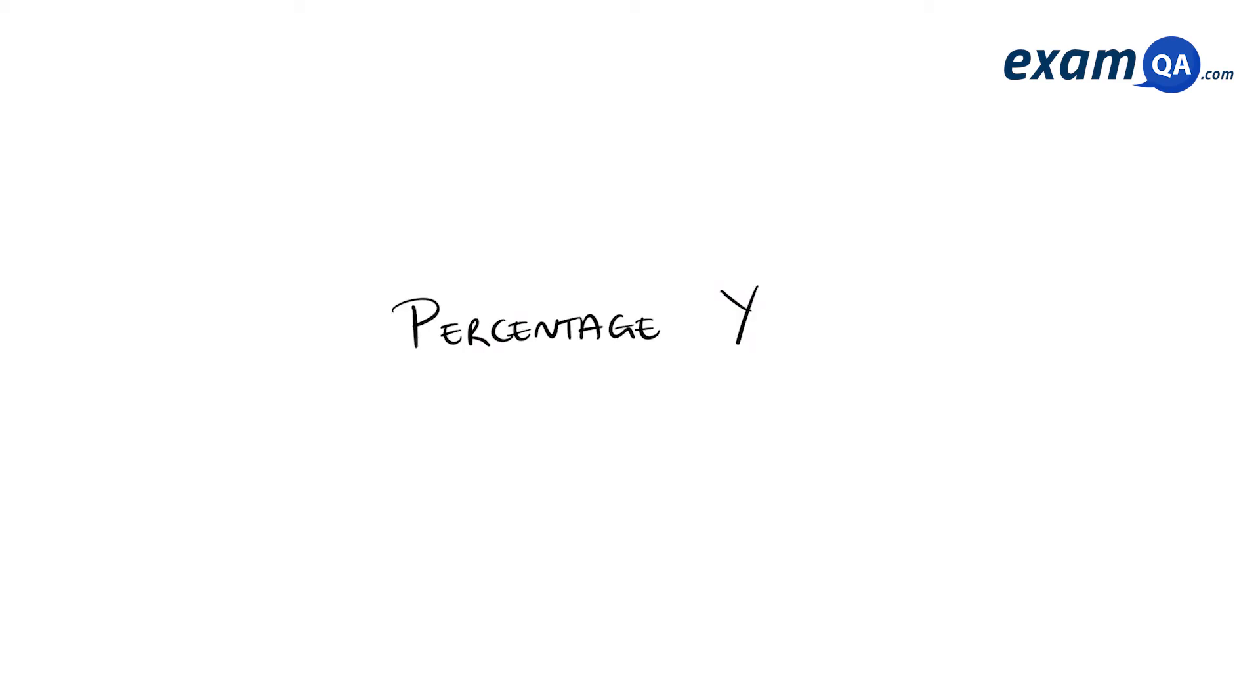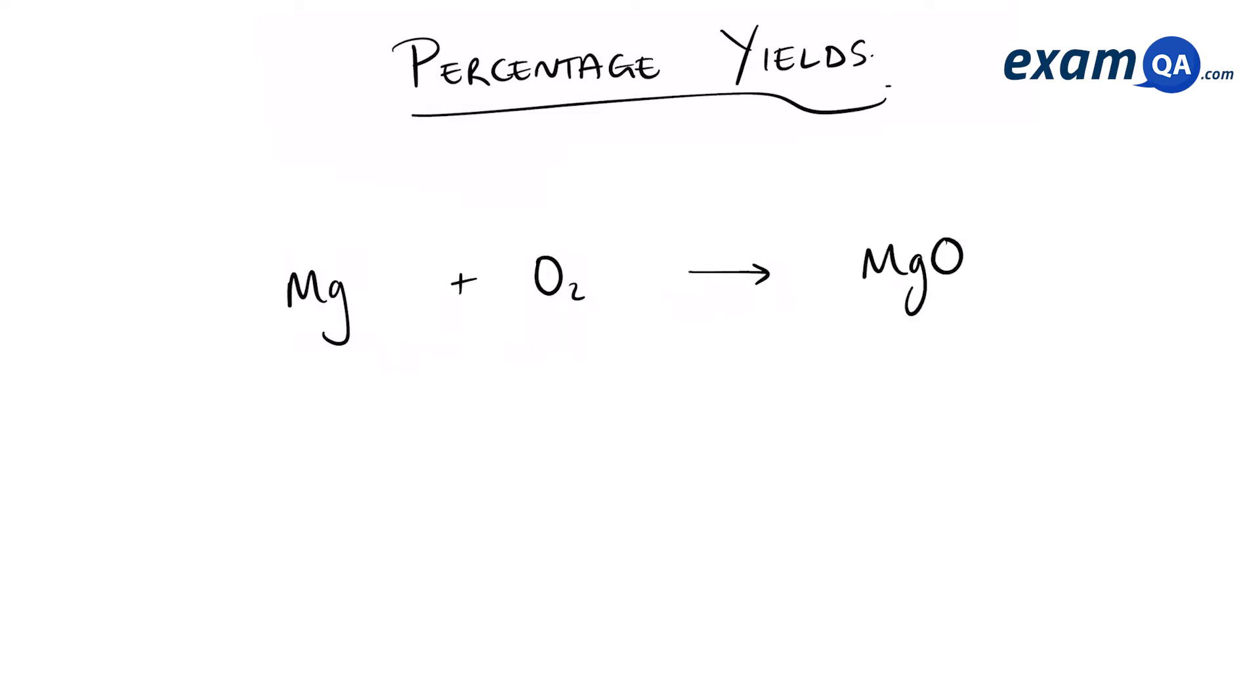This video is about percentage yields. Let's consider this reaction: magnesium plus oxygen creates magnesium oxide. How would you carry out this reaction in real life?